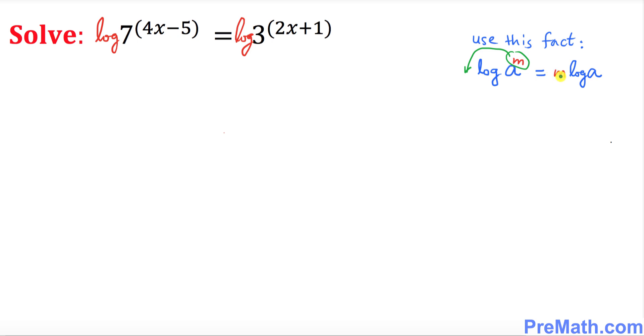So m is going to show up at the front and then you put log of a. In our case, as you can see, we have this is our exponent. So this exponent is going to show up at the beginning. Likewise this exponent is going to show up at the front.